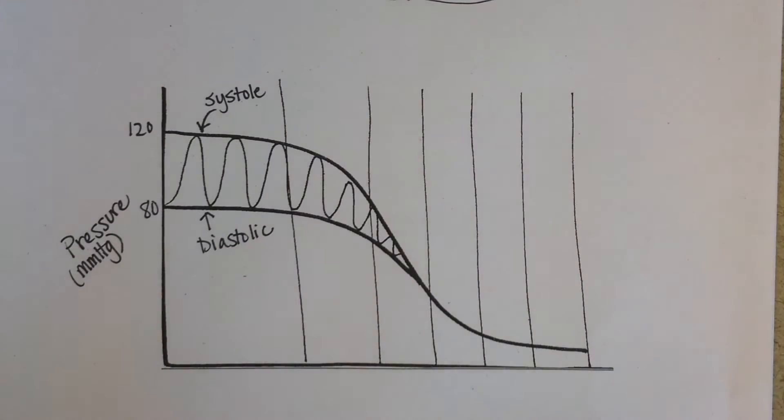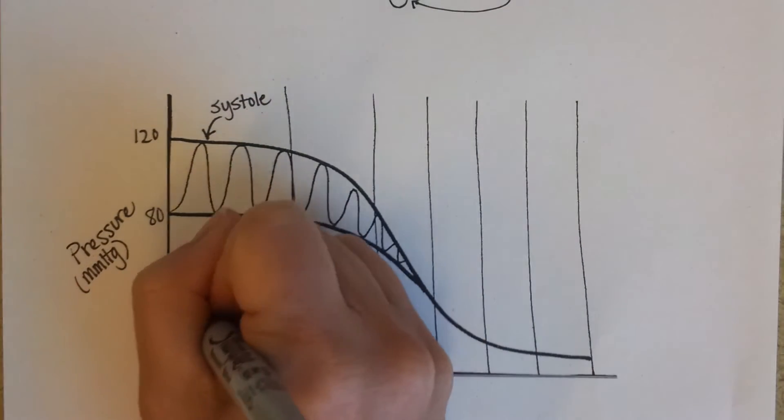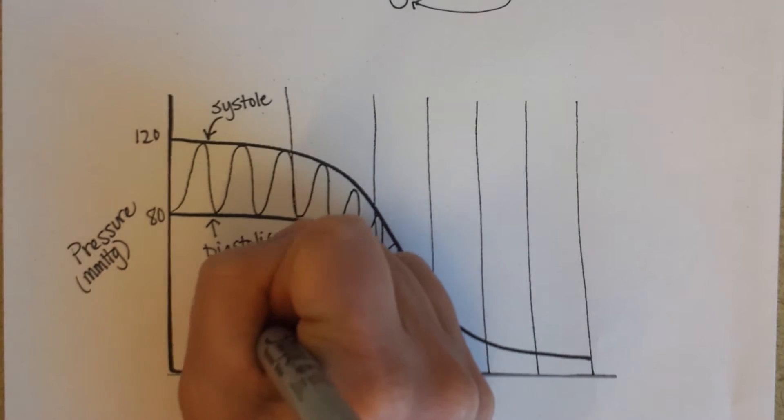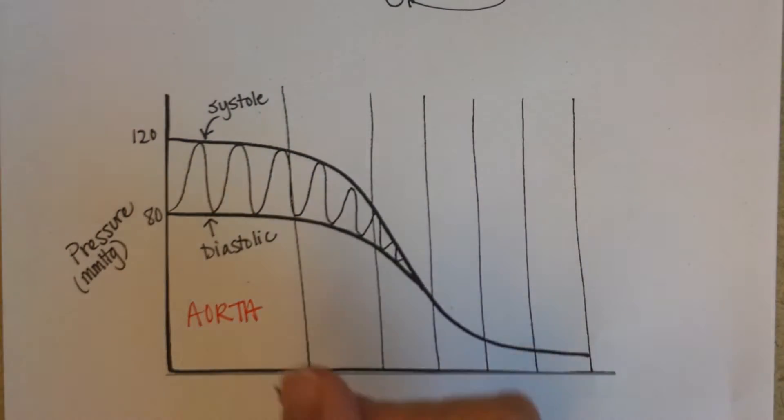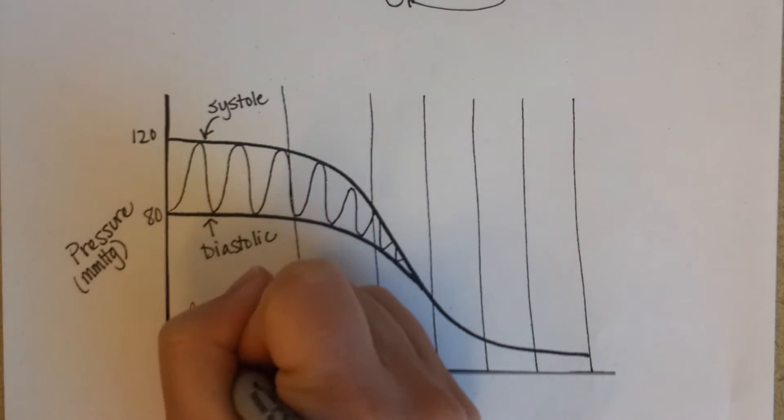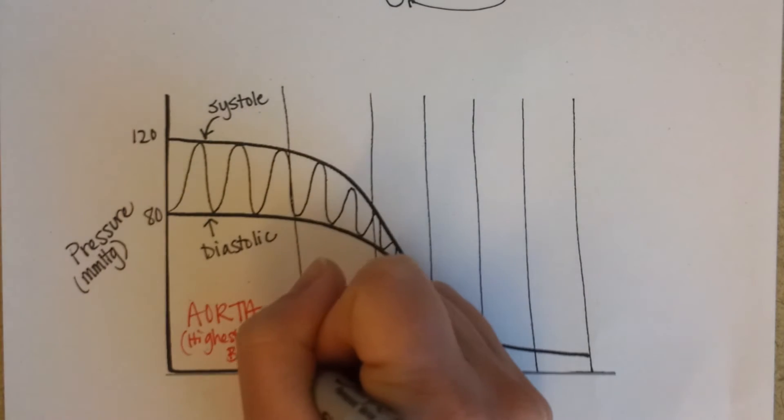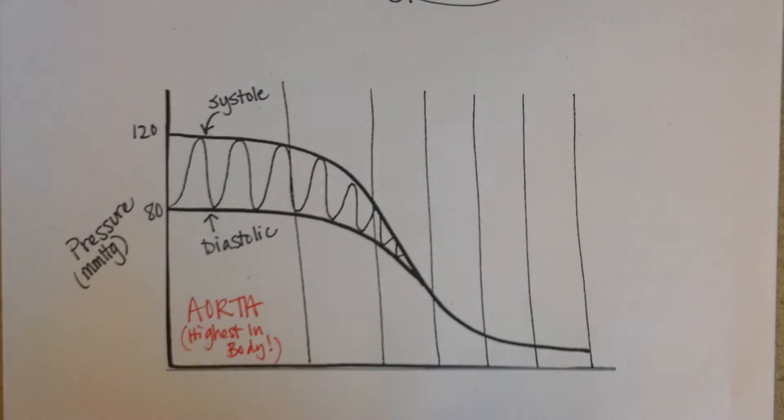So, use a red pen and you can write aorta here. Obviously this is going to be the highest pressure in the body as far as blood pressure goes. And then it's going to start dropping.